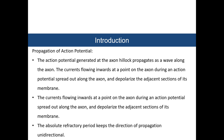The action potential generated at the axon hillock propagates as a wave along the axon. The current flowing inward at a point during an action potential spreads out along the axon and depolarizes the adjacent section of the membrane. The absolute refractory period keeps the direction of propagation unidirectional.